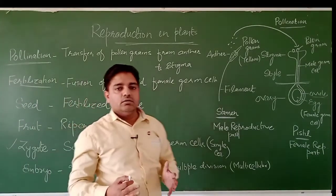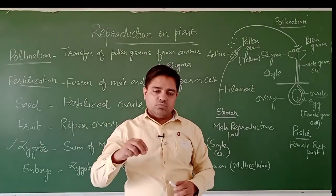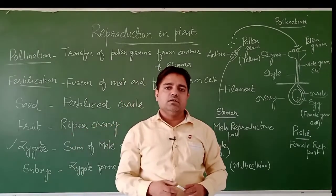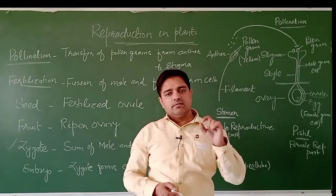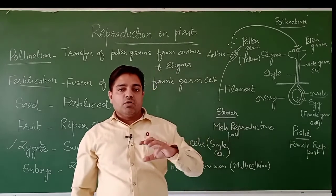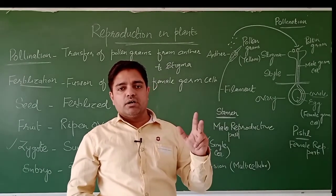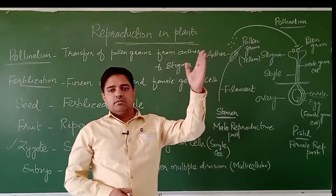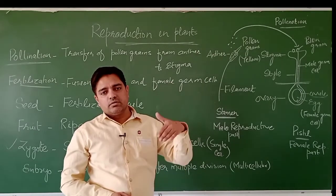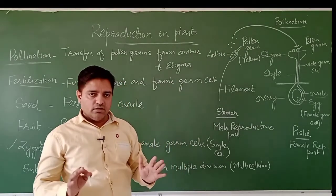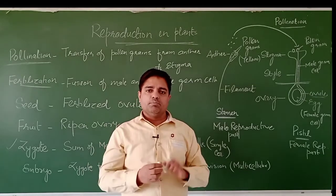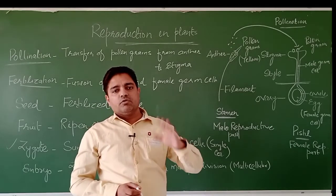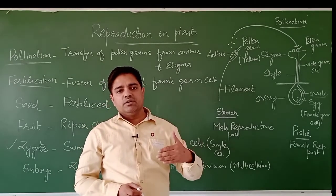Inside the seed, there is an embryo. When you sow seeds into the soil to grow new plants, the embryo inside the seed develops. The embryo has two parts: the plumule and the radicle. From the plumule, the shoot arises. From the radicle, the root grows downward.